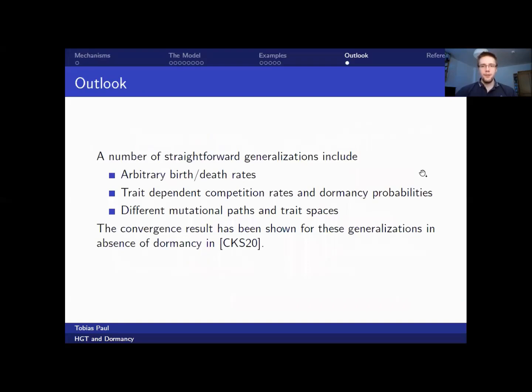Now this model, of course, is very specific and a number of straightforward generalizations are that we choose arbitrary birth or death rates. We can change the competition rates to be dependent on the trait. Right now we have one constant C governing all competition rates, but this could be trait dependent. And we can have trait dependent dormancy probabilities as well. And then again, we have a very specific trait space, which could be generalized to be an arbitrary graph and include different mutational paths such as having backward mutations. This convergence result that we have seen here has been shown for these generalizations in absence of dormancy by Charlene Smadi, Anna Kraut, and Lauren Cucumel in a recent preprint. And of course, it would be interesting to incorporate dormancy then into this generalized model.